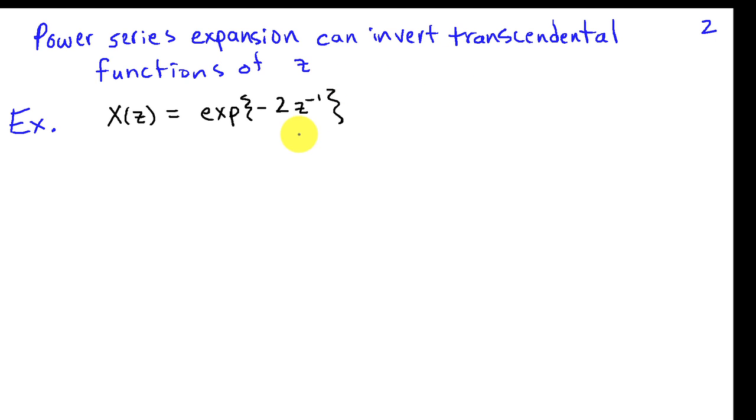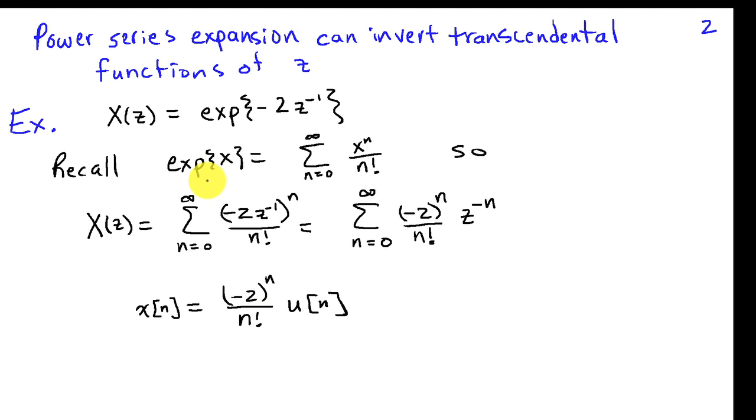For example, if I take X of Z as e to the power negative 2 Z inverse, well, I can write e to the X in terms of a power series and we know that e to the X is the sum N equals 0 to infinity of X to the N over N factorial.